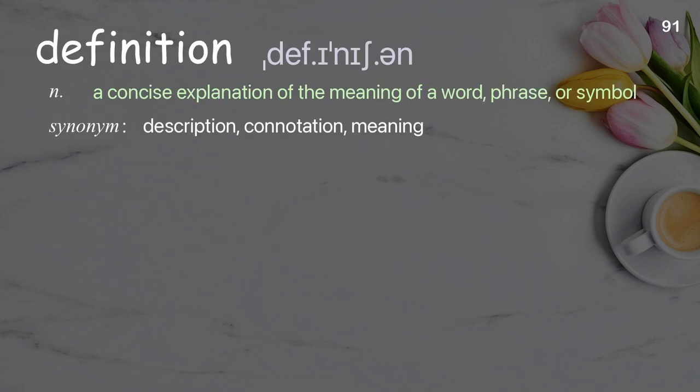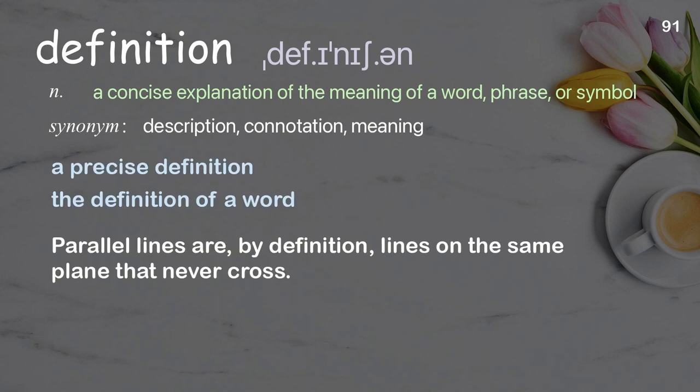Definition: a concise explanation of the meaning of a word, phrase, or symbol. Examples: a precise definition; the definition of a word. Parallel lines are, by definition, lines on the same plane that never cross.